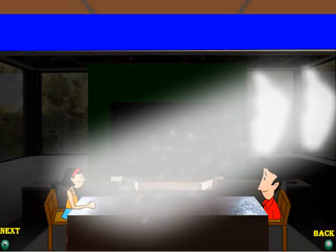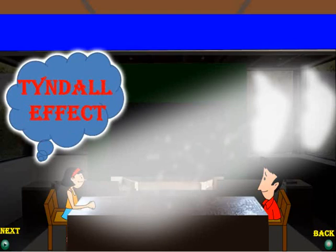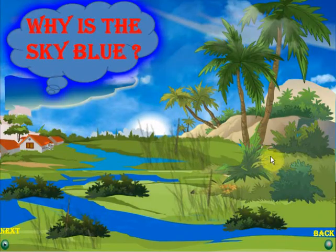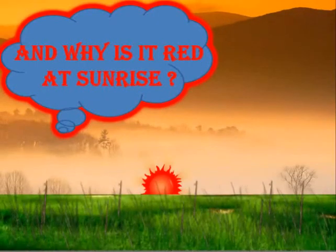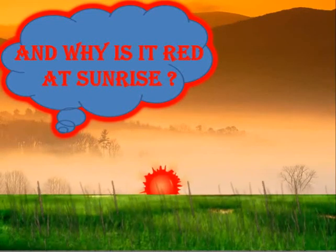You must have observed that sometimes when light enters a dark room, the dust particles in the light become visible and the path of the beam of light also becomes visible. This is called the Tyndall effect. Why does this occur? Also, why is the sky blue and why does the sky appear red during sunrise and sunset? We will learn about all these phenomena in this chapter, called the scattering of light.